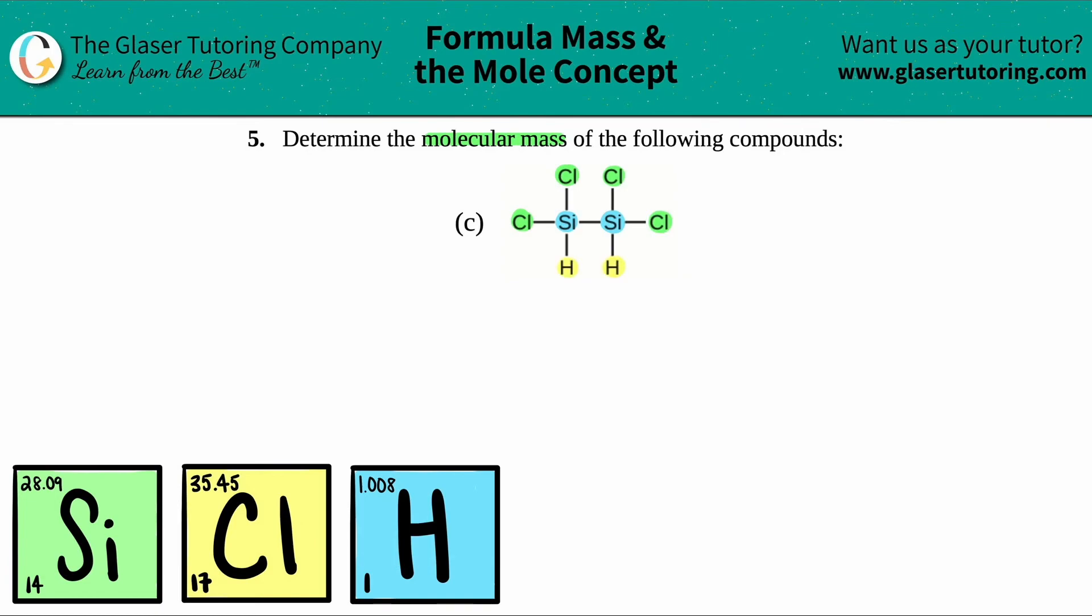The first thing I'm going to do is I'm going to convert what this is into a chemical formula. Now technically when you're trying to find the mass, it doesn't really matter what element you say first in your formula. You just got to make sure that you have the right numbers. I'm going to start with the silicons in the middle. How many silicons do we have? Well, I have two blue circles, so I have Si2.